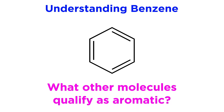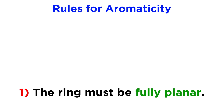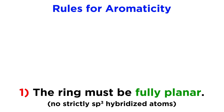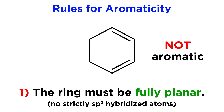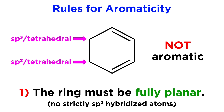So benzene will indeed be aromatic, but what other molecules are aromatic? Let's go over the rules for aromaticity so that we can identify a wide variety of molecules as being aromatic. First, an aromatic ring must be fully planar. That means that we can't have any carbons that are strictly sp3 hybridized. So while benzene is aromatic, if we took away a pi bond, this would no longer be aromatic, for several reasons — one of which is that these sp3 carbons are not planar; they are tetrahedral.